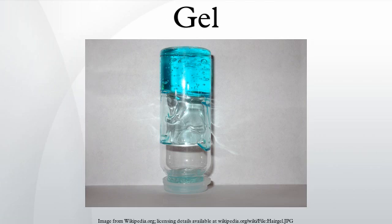A hydrogel is a network of polymer chains that are hydrophilic, sometimes found as a colloidal gel in which water is the dispersion medium. Hydrogels are highly absorbent natural or synthetic polymeric networks. Hydrogels also possess a degree of flexibility very similar to natural tissue, due to their significant water content.